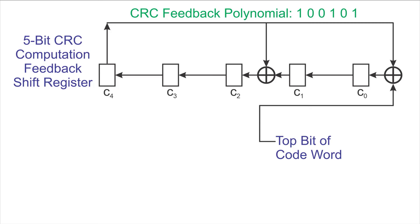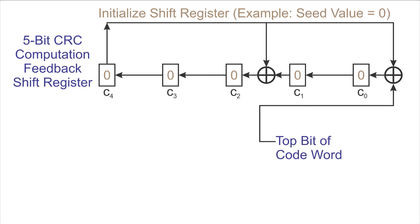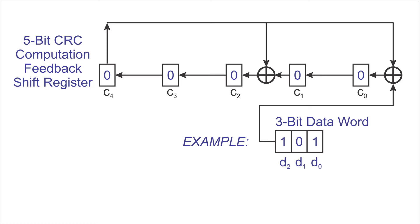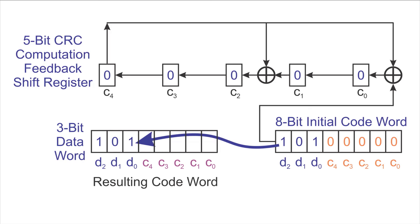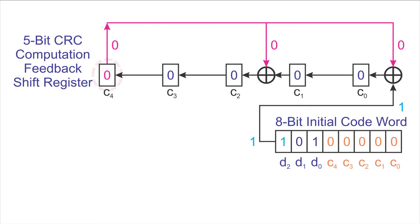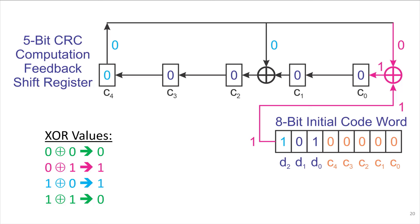The pattern of these XORs and where they're placed corresponds to the CRC polynomial and gives different mixing patterns for fault detection. We initialize the shift register with a seed value of 0. We show our 3-bit data word; to compute the check value, you have an initial check value that's all zeros and run it through this hardware system. Looking at the top bit in the code word, it's a 1, and that goes into the bottom XOR gate. We also have a 0 in the top of the feedback shift register, so 0 XOR 1 gives a 1 waiting for C0.